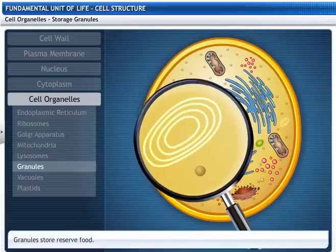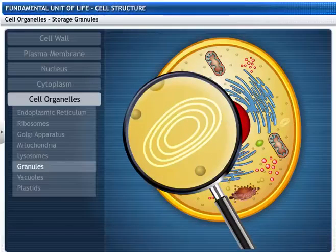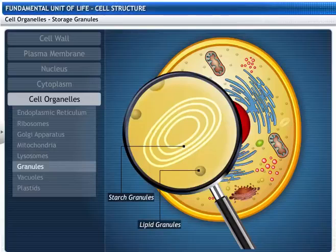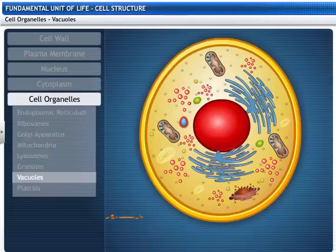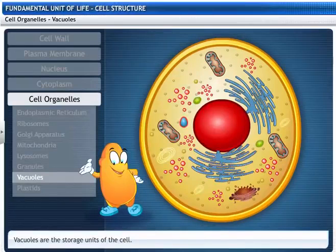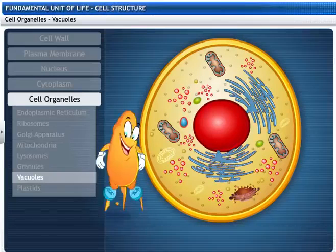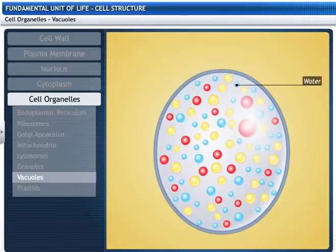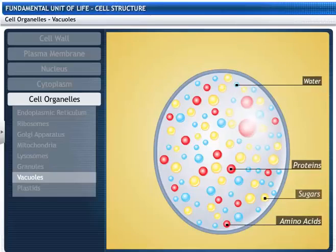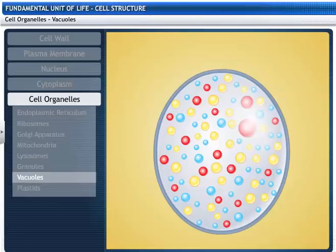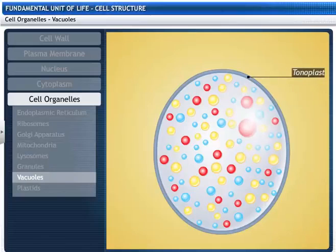Let's now focus on the storage granules. They are of two types: starch granules, which are storage droplets of starch, and lipid granules, which are storage droplets of fat. Cells also have storage units called vacuoles, which store water, energy, waste products, and substances like amino acids, sugars, and proteins. The fluid contained in them is called cell sap, and a vacuole is covered by a living membrane called the tonoplast.